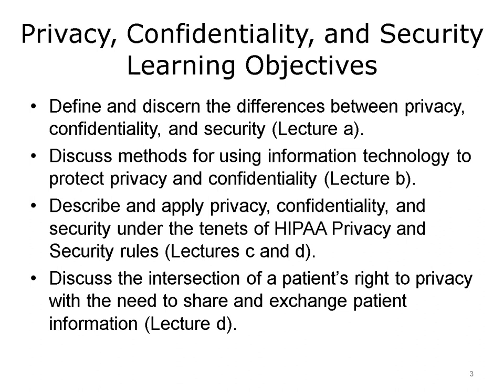The objectives for privacy, confidentiality, and security are to define and discern the differences between privacy, confidentiality, and security. Discuss methods for using information technology to protect privacy and confidentiality. Describe and apply privacy, confidentiality, and security under the tenets of the HIPAA Privacy and Security Rules. Discuss the intersection of a patient's right to privacy with the need to share and exchange patient information.